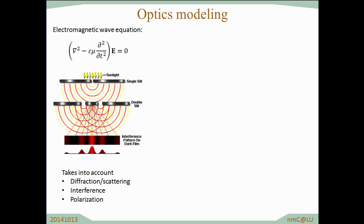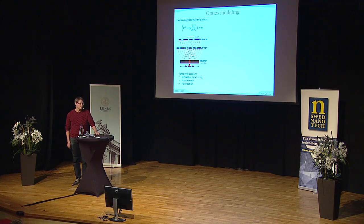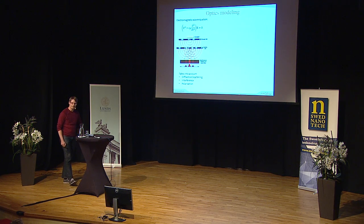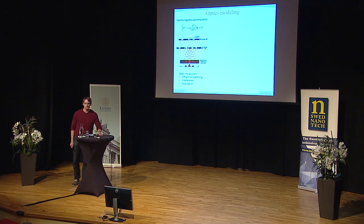What we do is solve the electromagnetic wave equation — shown here on the upper left — which can be used, for example, to explain how the famous double slit experiment works: we send light towards a narrow slit from which light waves spread out, hit a double slit, and create an interference pattern at the screen further down. This kind of modeling includes diffraction, interference, and polarization, which is all that is needed for explaining how light interacts with nanostructures.